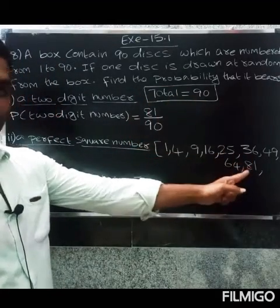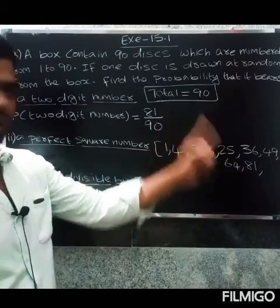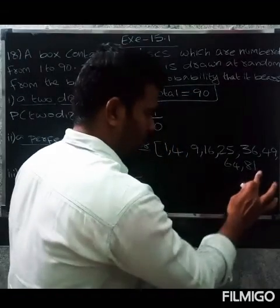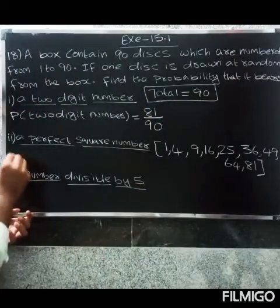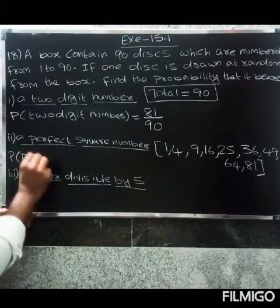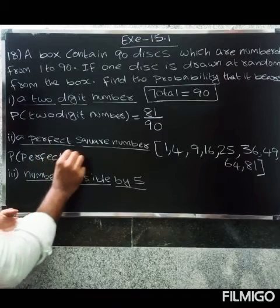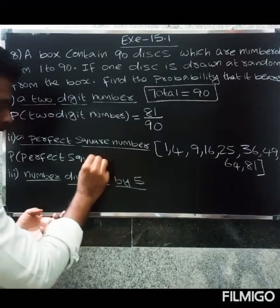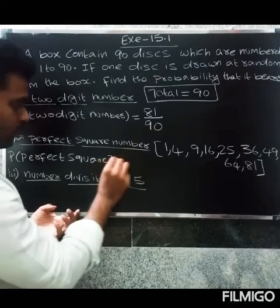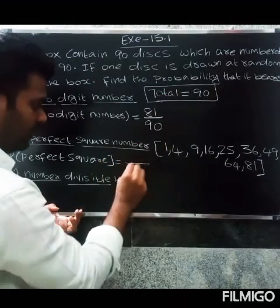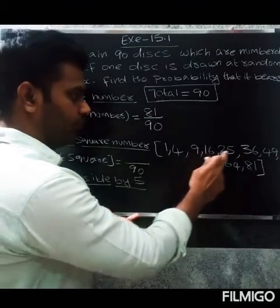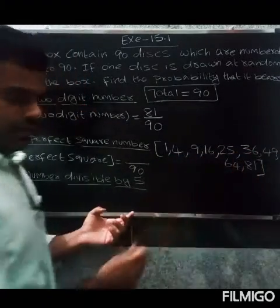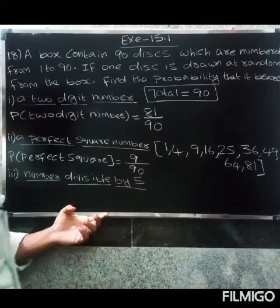Okay, so probability of perfect square equal to... total is 90. I don't want to get the number of... one, two, three, four, five, six, seven, eight, nine. Okay, so nine divided by 99, so they cancel. Night divided by... one divided by 10.